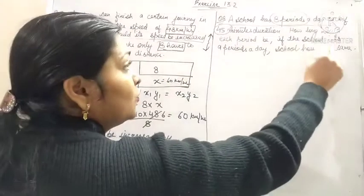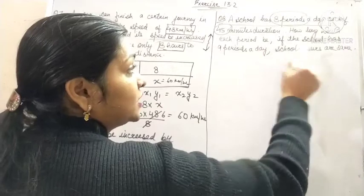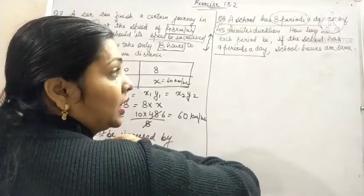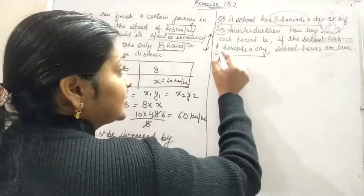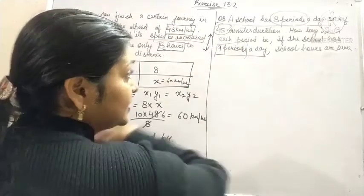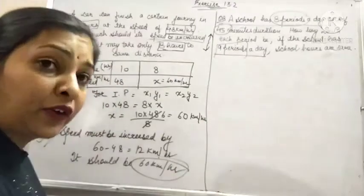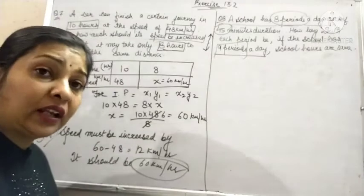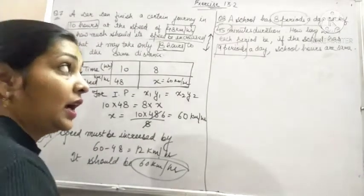How long would each period be if the school has 9 periods a day? School hours remain the same. That means that in the same period of time, instead of 8, we have to take 9 periods.